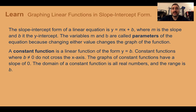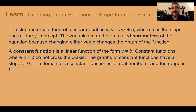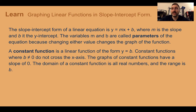Let's learn about graphing linear functions in slope-intercept form. The slope-intercept form y equals mx plus b has parameters m and b — changing either value changes what the graph looks like. A constant function has the form y equals b, which makes a horizontal line. Constant functions where b is not zero don't cross the x-axis, have a slope of 0, a domain of all real numbers, and a range of just b.